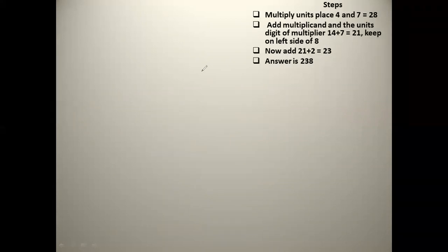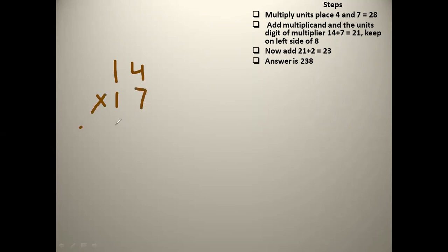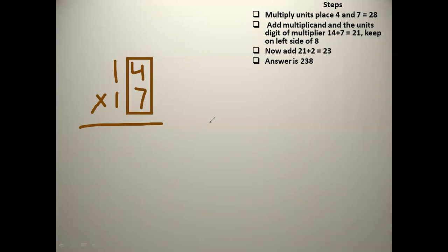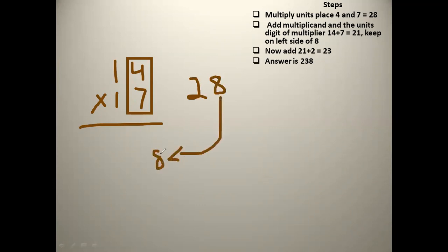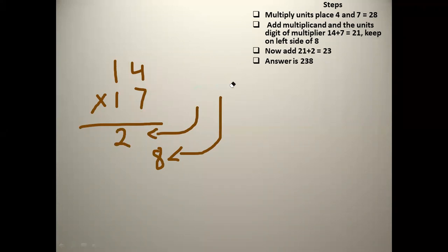Our first example: 14 times 17. The first step is we have to multiply the units. We multiply 4 into 7, which gives the answer 28. We keep the 8 here and the 2 here. After arranging 28 in this manner, we move on to the next step.